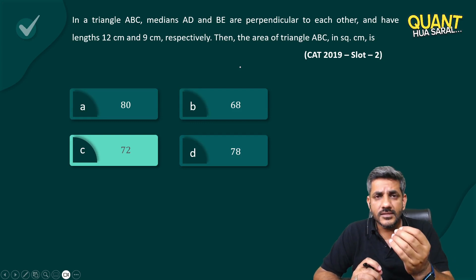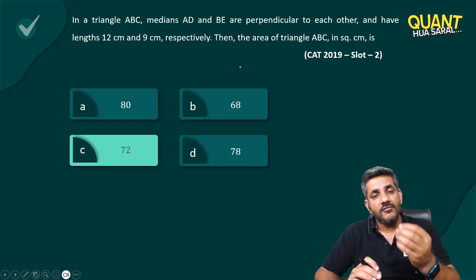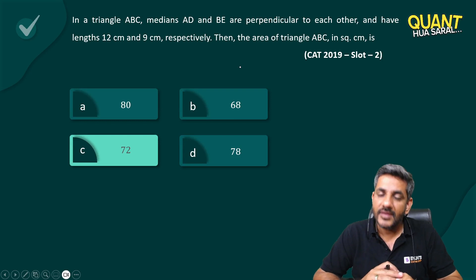It just required the knowledge of centroid dividing a median in a ratio of 2:1, and when three medians are drawn, the triangle is divided into six equal triangles in terms of area. That's all, thank you very much.